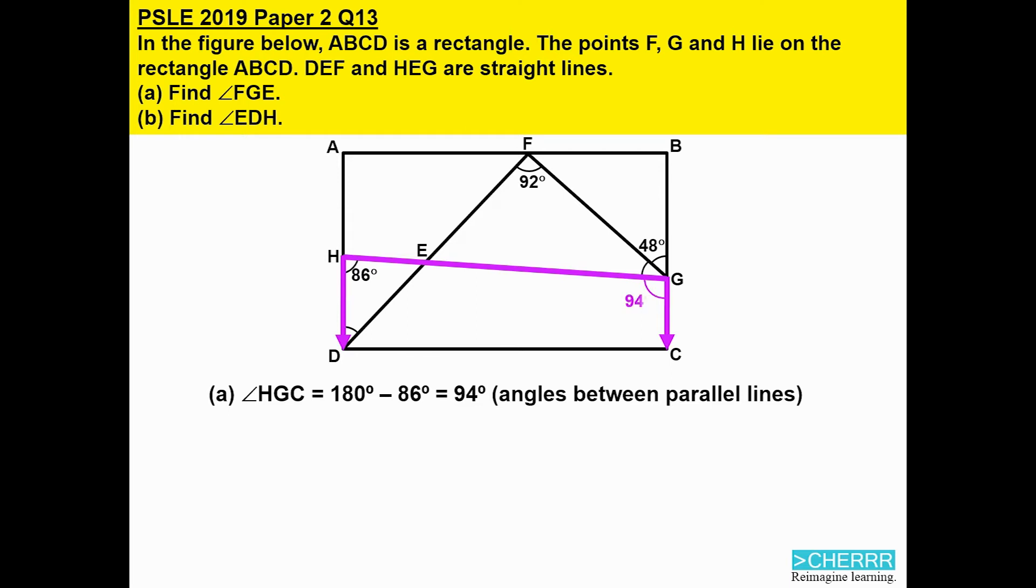Therefore, when you take 180 minus 86, we will be able to get 94 degrees for angle HGC.